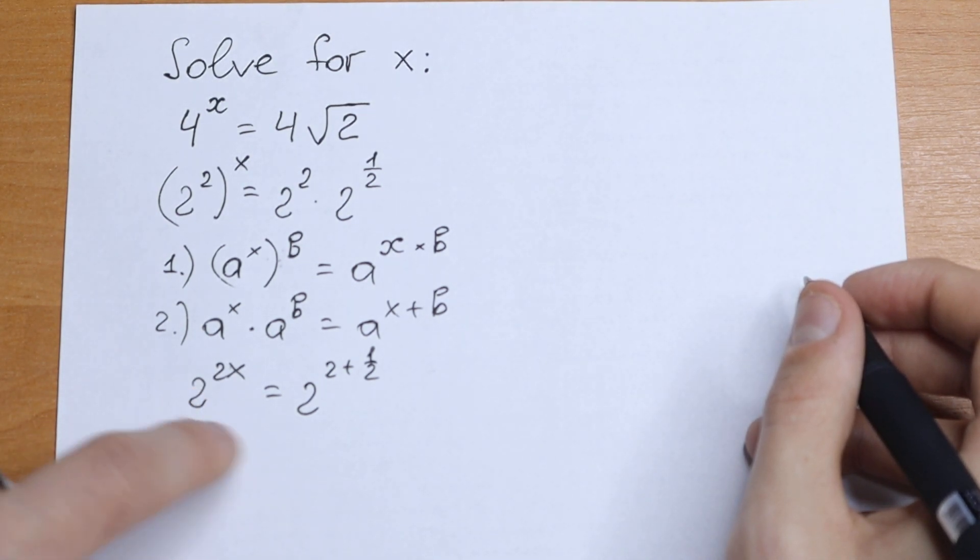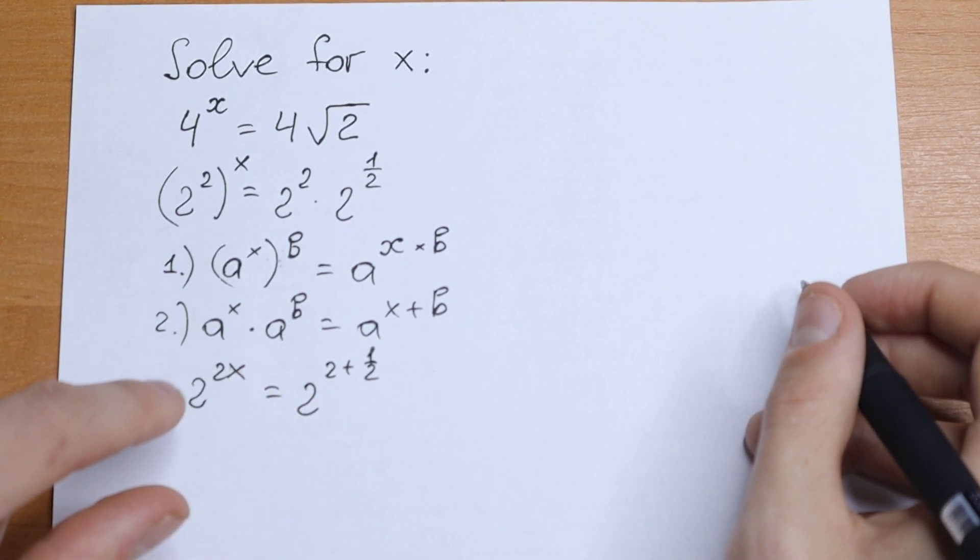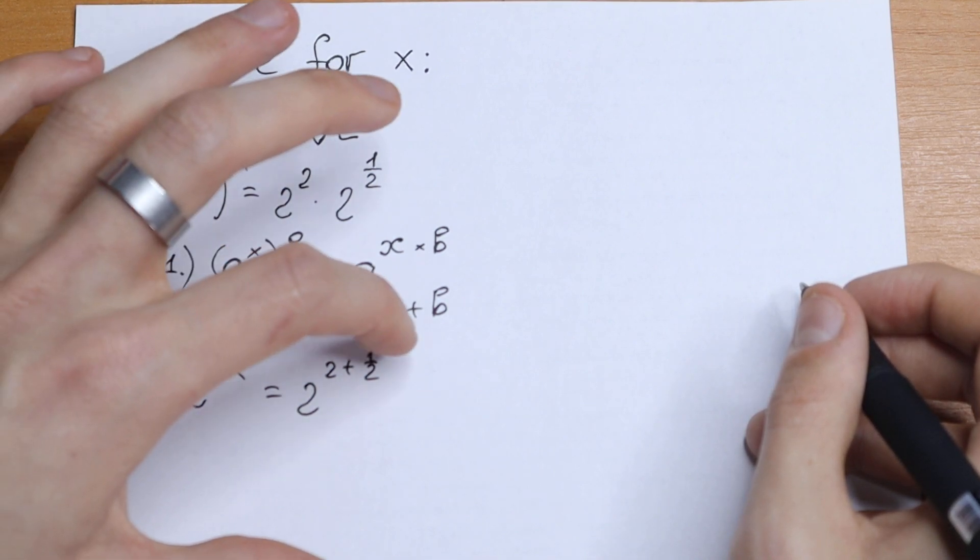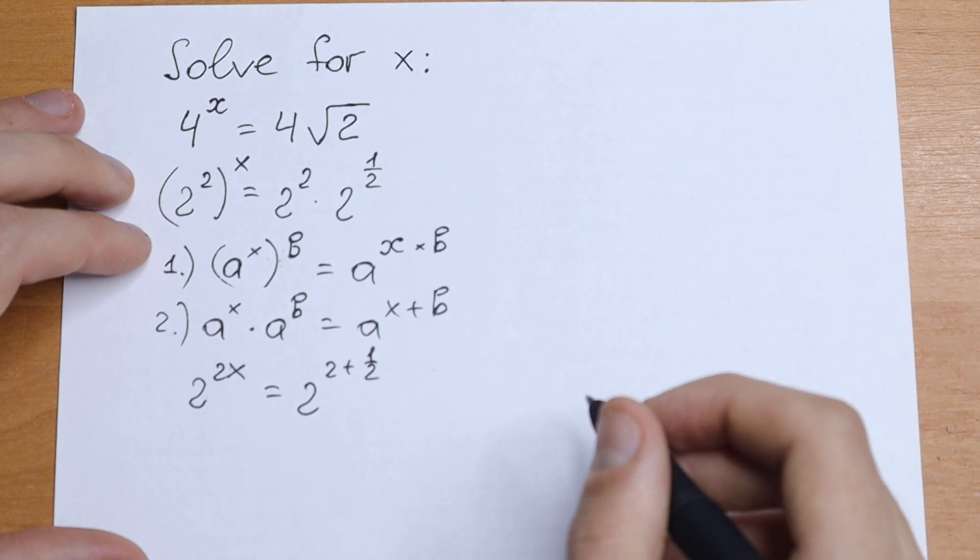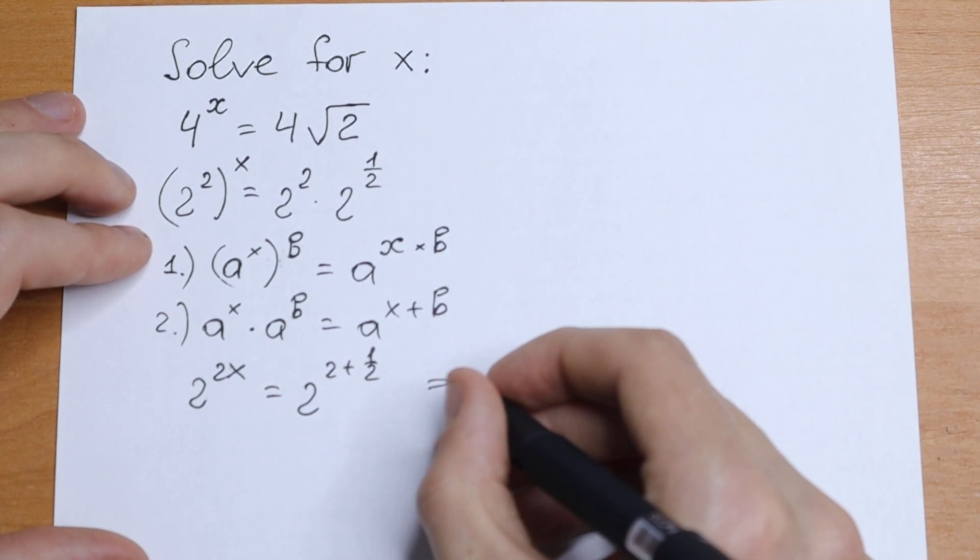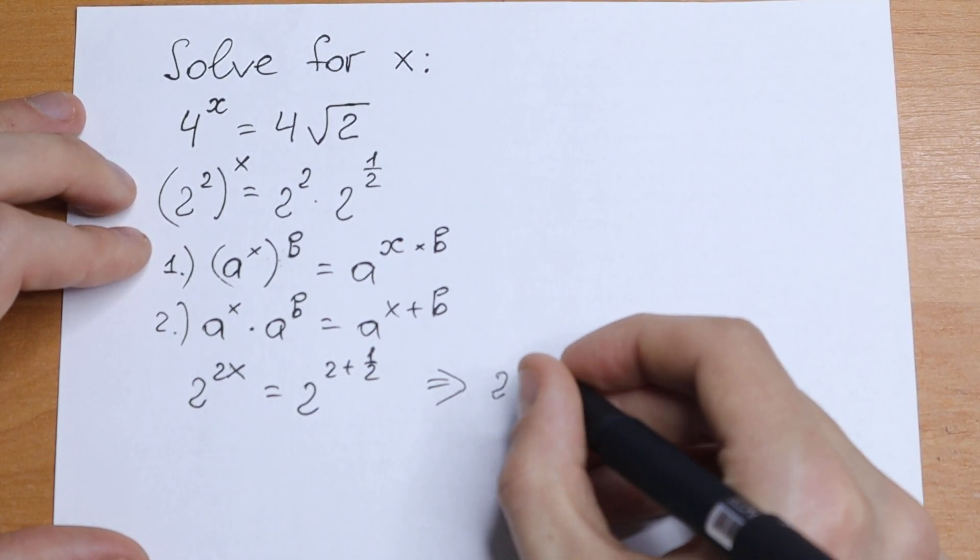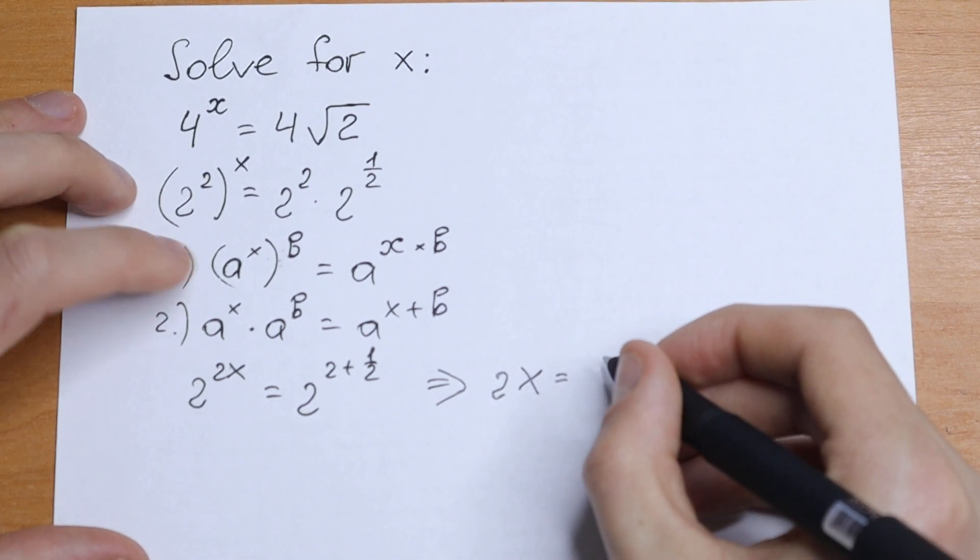What we're going to do next? Take a look. We have the same basis, so we need to write an equation with our exponents. So we have 2x equal to 2 plus 1 half. We have an interesting equation from here: 2x equal to 5 half.